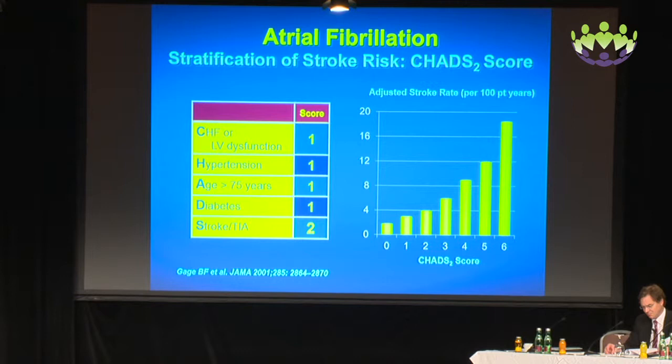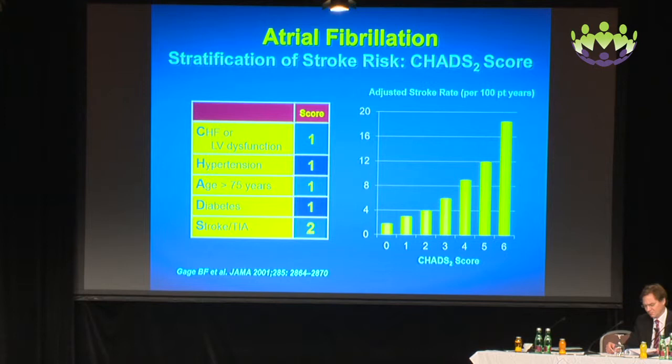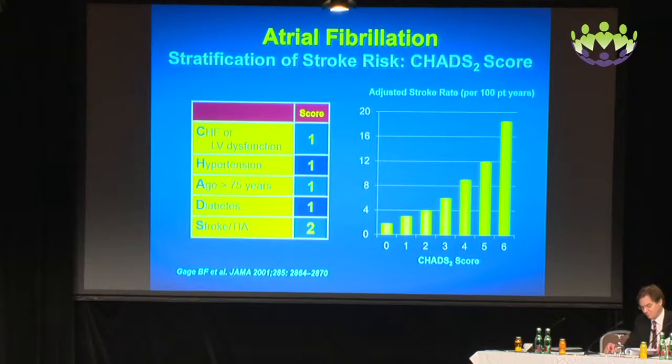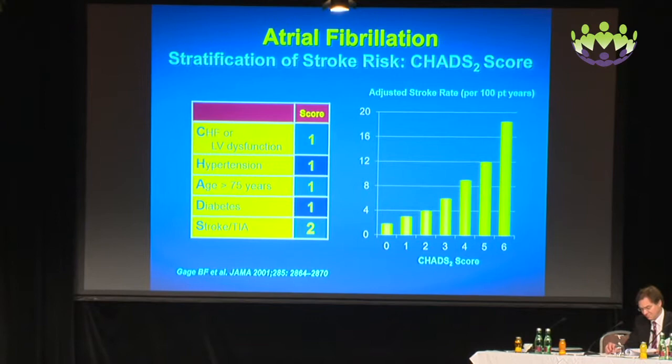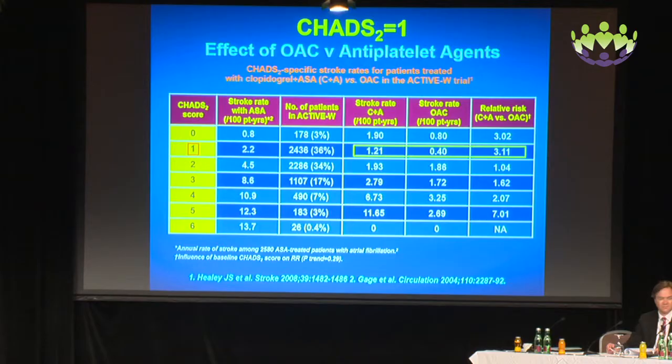He gave them scores roughly equating to the hazard ratio associated with them: one point for heart failure, hypertension, age 75 or more, and two for stroke or TIA. When you add these scores together, there is an increase in the annual risk of thromboembolism. With a score of zero, the annual risk was around 2%. For a score of one, the risk was about 3.5% per annum — which, looked at over 10 years, represents a 35% risk of stroke.